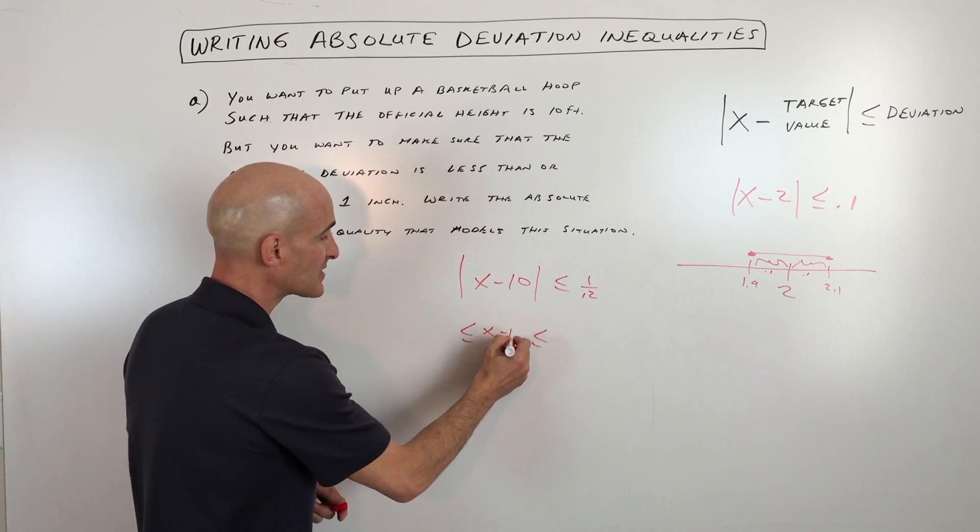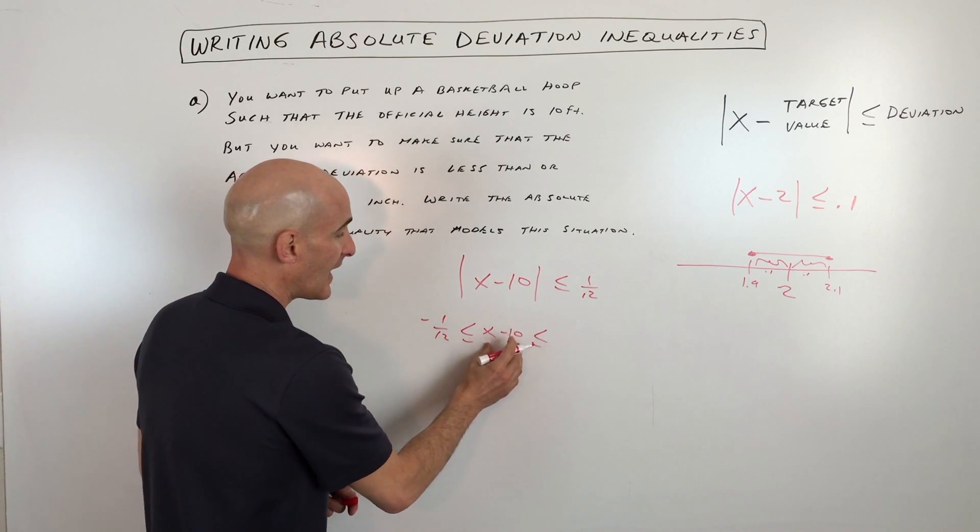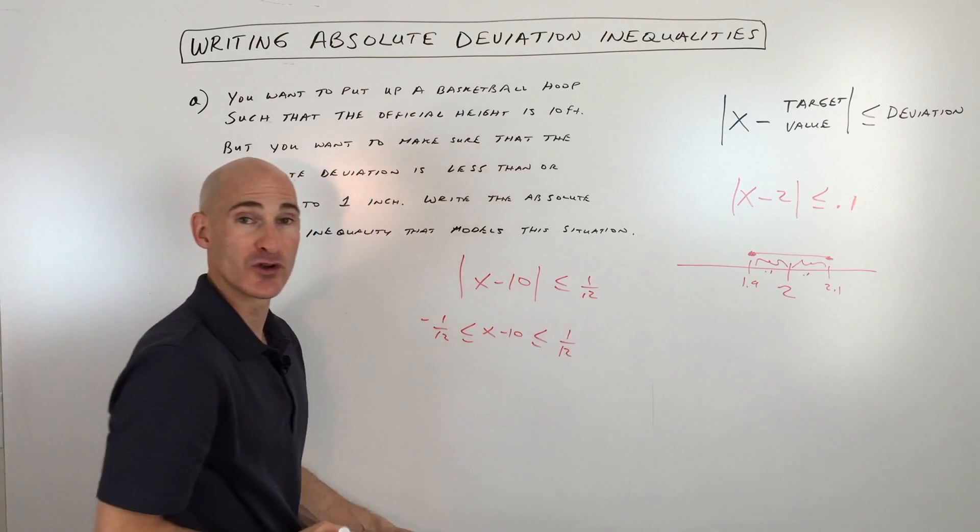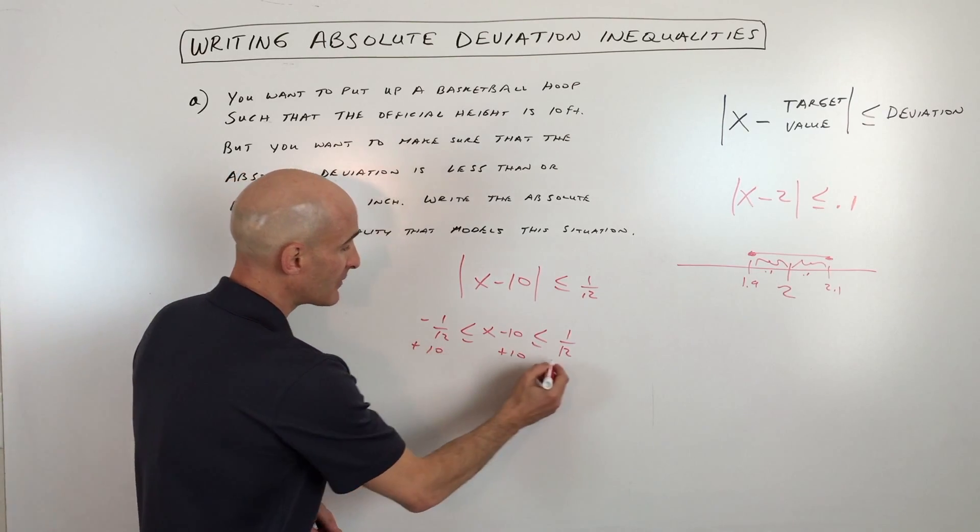You can say X minus 10 is greater than or equal to negative one twelfth and less than or equal to positive one twelfth. So I'm just going to add 10 to the middle, the left, and the right.